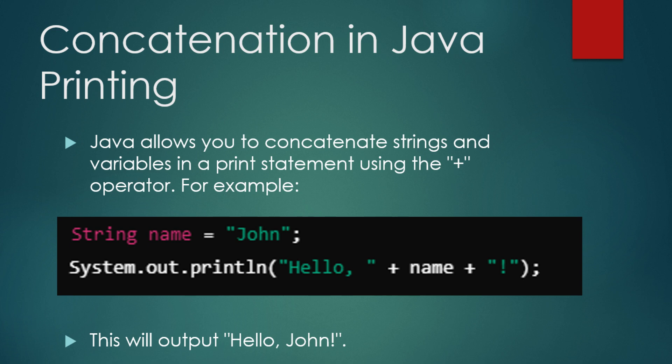Java allows you to combine or concatenate different pieces of text and variables in a single print statement using the plus operator. Here's an example: String name = "John"; System.out.println("Hello " + name + "!"). This code will print Hello John! to the console. The plus operator is used to join the string Hello with the value of the name variable, and then we add an exclamation mark at the end.